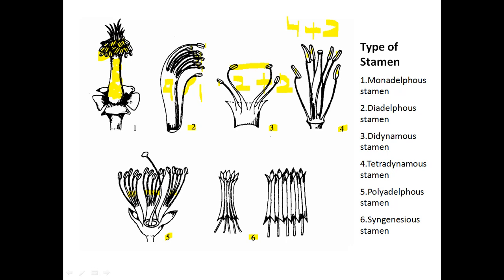Comparing the sixth diagram with the first and second diagrams: in those earlier diagrams the filaments are fused together while the anthers are free. But in the sixth diagram, all the filaments are separated and the anthers are fused together. When the anthers are fused together, this arrangement is known as syngenesious. In syngenesious stamens, filaments are free while anthers are fused together.